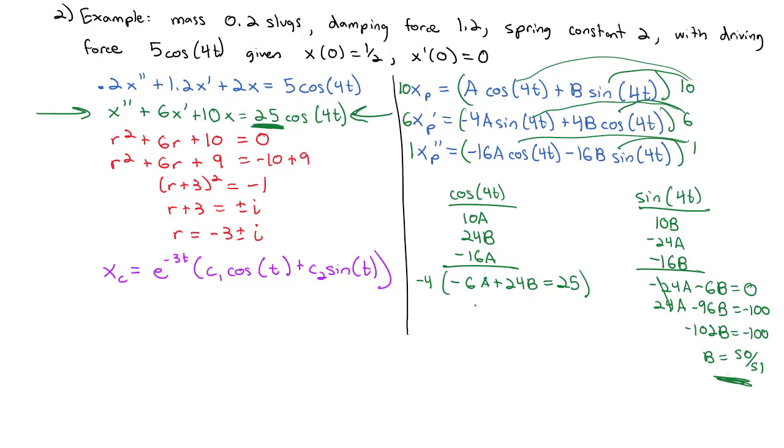Plugging that into the other equation, we've got -6A + 24(50/51) = 25. -6A + 1200/51 = 1275/51. So -6A = 75/51, which means A = -25/102.